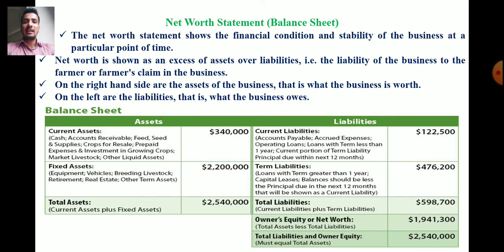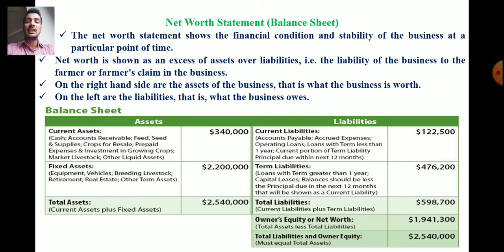Assets are kept on the right hand side of the balance sheet and liabilities are kept on the left hand side. In the balance sheet we can calculate total assets, total liabilities, and owner's equity or net worth — that is, total assets minus liabilities gives us net worth or owner's equity.